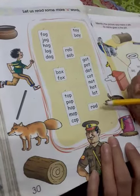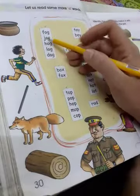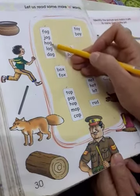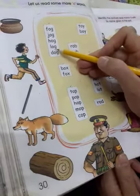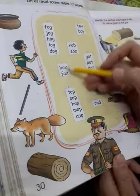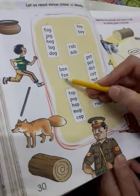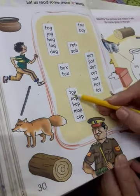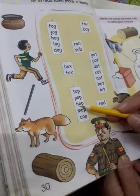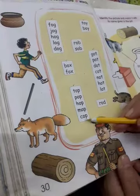So today we will read page number 30 and let's start the reading. F-O-G fog, J-O-G jog, H-O-G hog, L-O-G log, D-O-G dog, B-O-X box, F-O-X fox, T-O-P top, P-O-P pop, H-O-P hop, M-O-P mop.